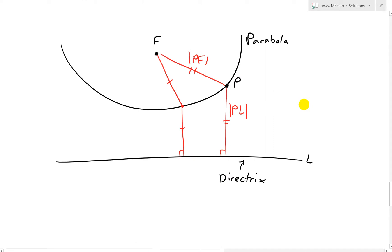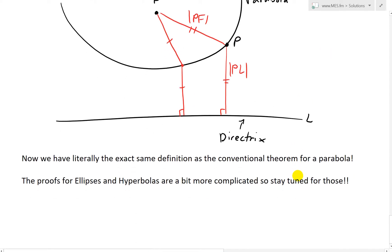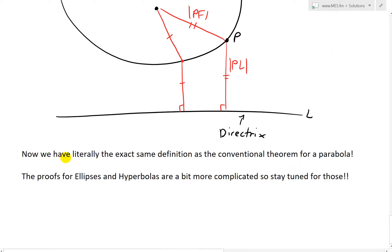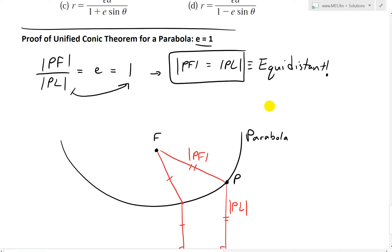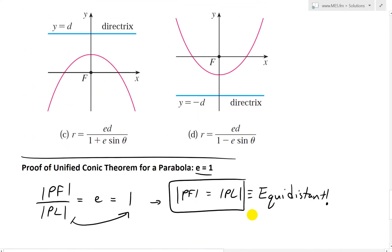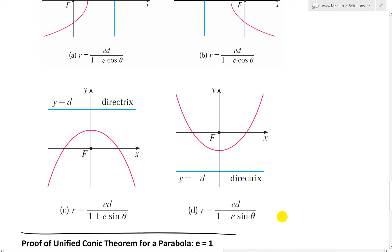So there it is, that's all we have to do, it's pretty simple. And so now we have literally the exact same definition as the conventional theorem for a parabola. In other words, that's the proof. And now, that's all for today. Now the proofs for ellipses and hyperbolas are a bit more complicated, so stay tuned for those. Pretty simple, just apply the theorem, it's going to be the exact same as the conventional one.